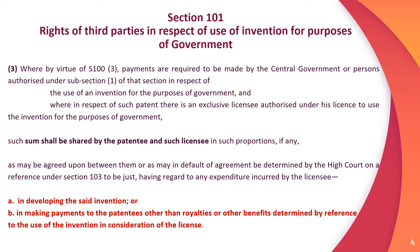Section 101 Subsection 3: By virtue of Section 100 Subsection 3, if any payment is required to be made by the central government or a person authorized by it in respect of use of an invention for government purposes, and if such patent has an exclusive licensee authorized under their license to use the invention for government purposes, then the sum will be shared by the patentee and licensee in a proportion agreed between them or determined by the High Court.